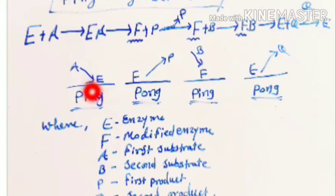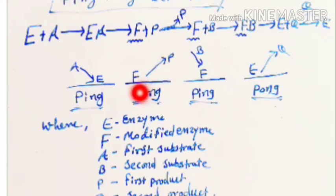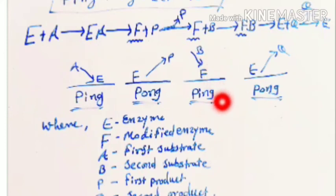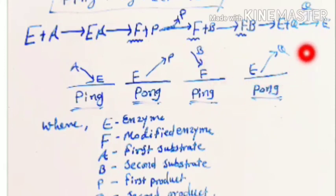This is illustrated as follows: the enzyme E joins the first substrate — ping, like pressing the ball to the ground. It converts the substrate into product P, but now the enzyme has become EF. The product is released — pong. Then EF joins the second substrate B — ping again. The enzyme converts substrate B into product Q, then bounces back up, releasing the free original enzyme — pong. This ping-pong-like motion gives the mechanism its name.